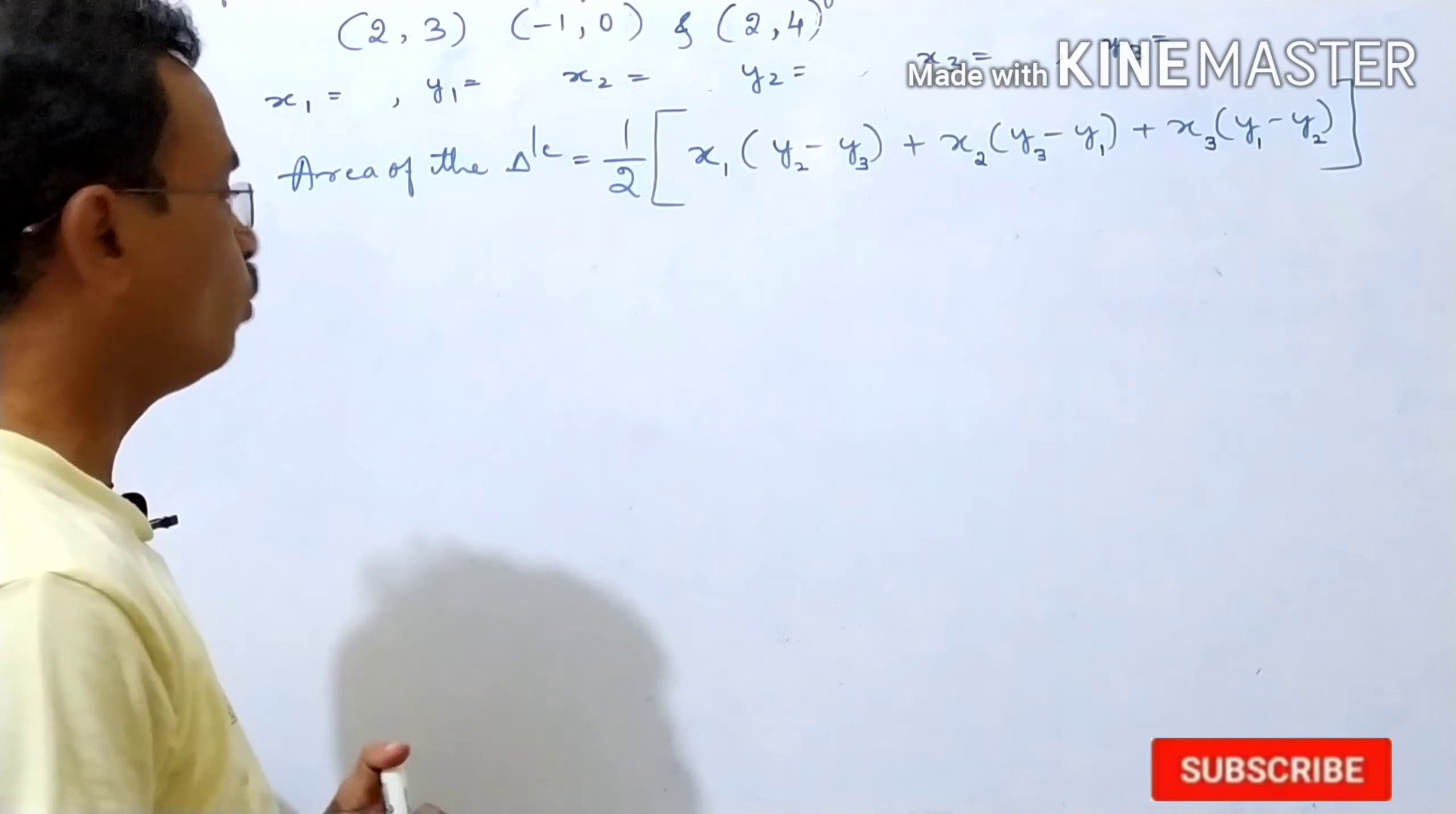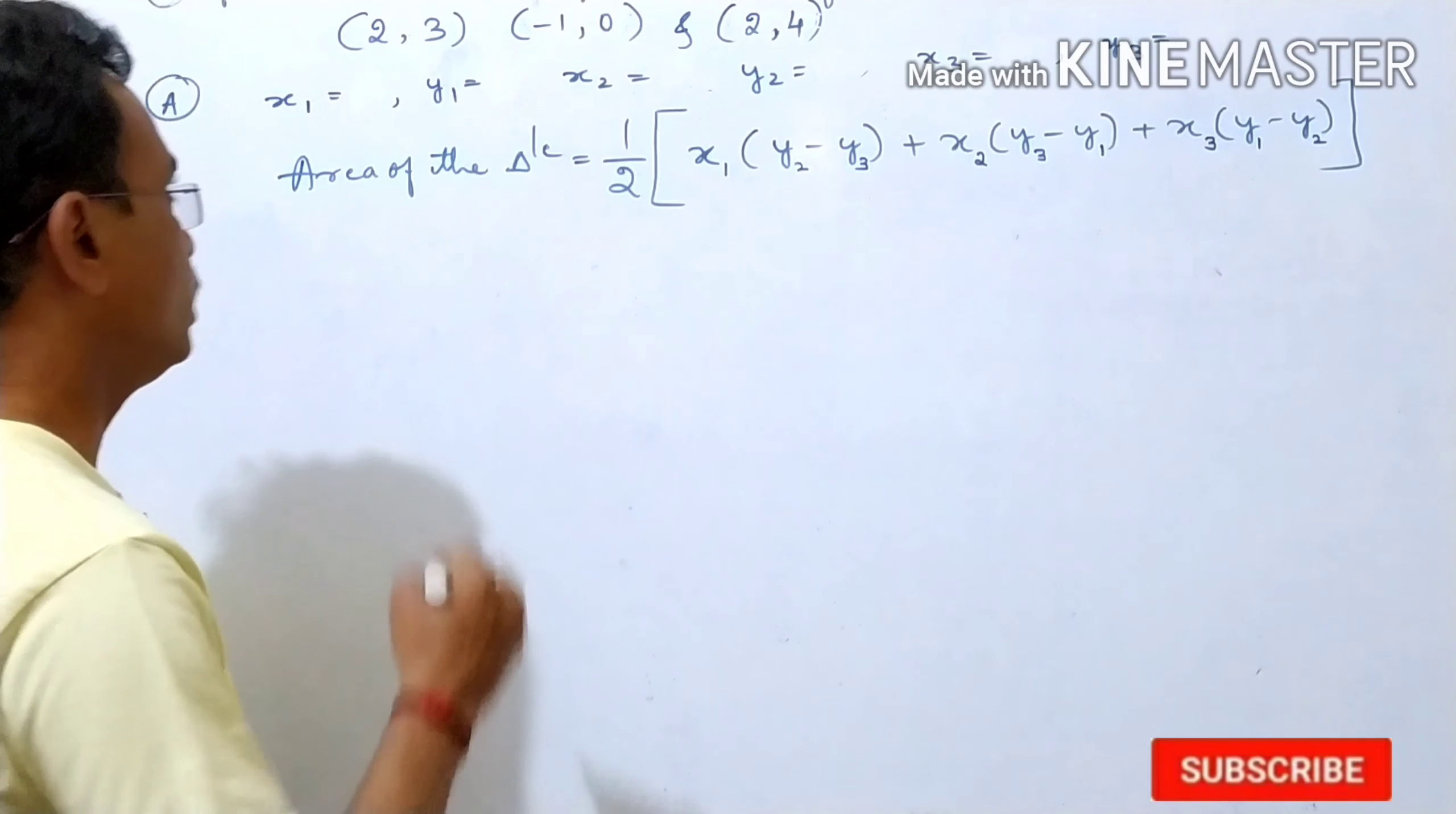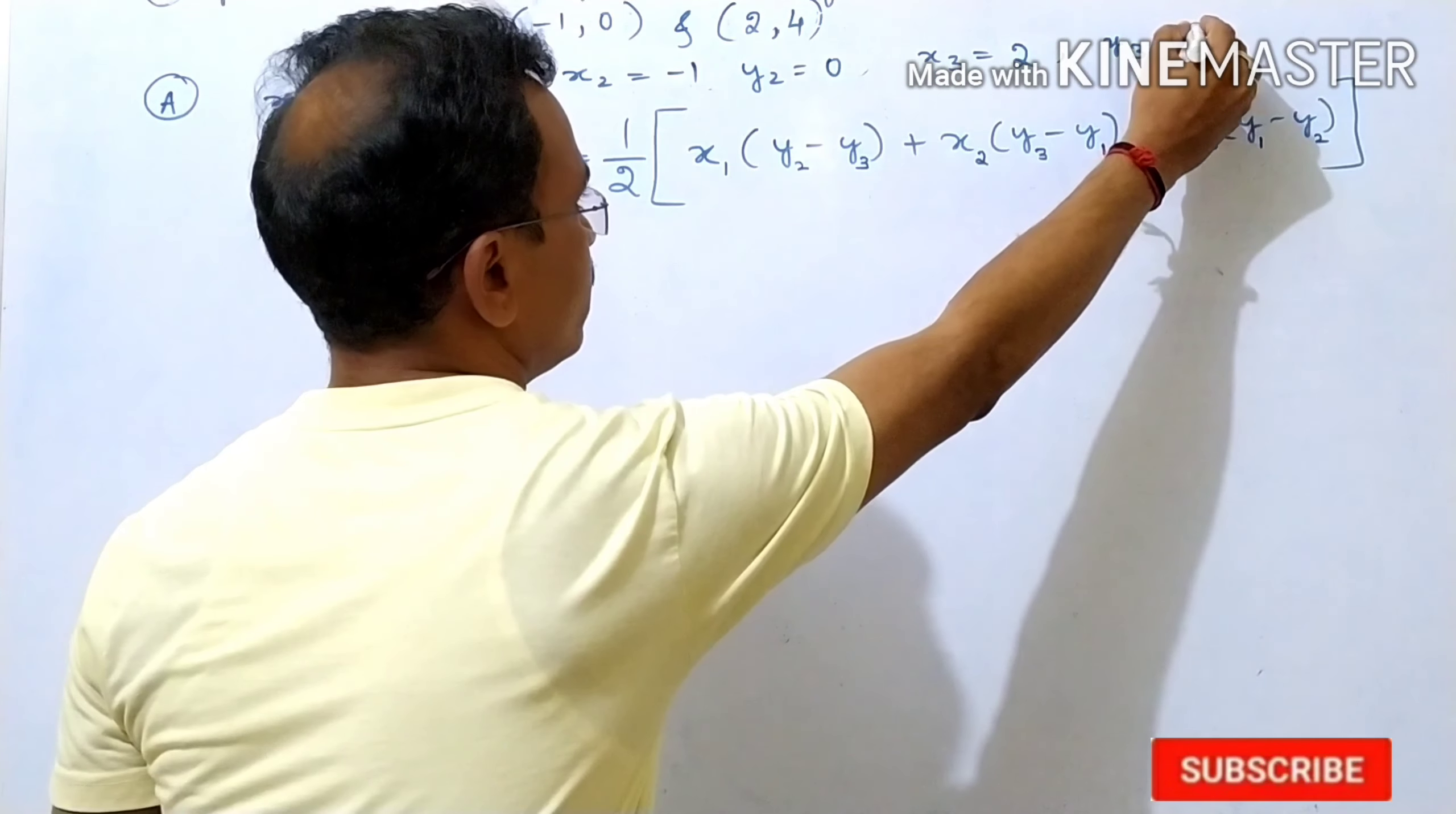Question number 4. We are given 2, 3, minus 1, 0 and 2, 4. x1 what is here? 2, then y1 is 3, x2 is minus 1, y2 is 0, x3 is 2 and y3 is 4.